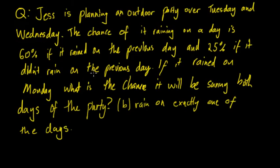So we can automatically say this is a Markov chain question. You can see that the chance of it raining is dependent on the previous day and it's given us the probability for both of these scenarios. The questions are: if it rained on Monday what is the chance it will be sunny both days of the party, and be rain on exactly one of the days.